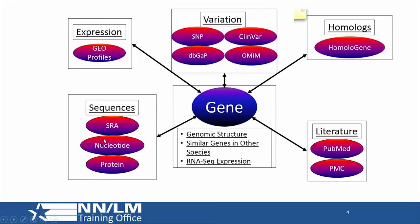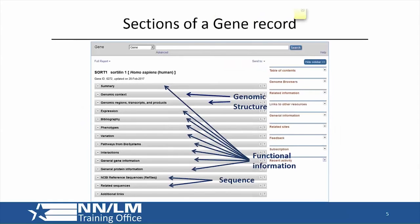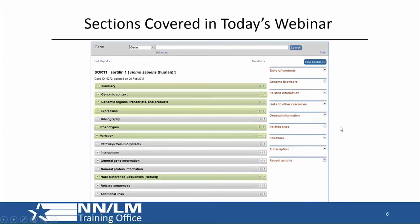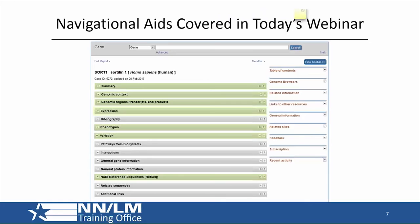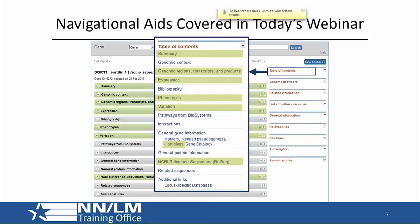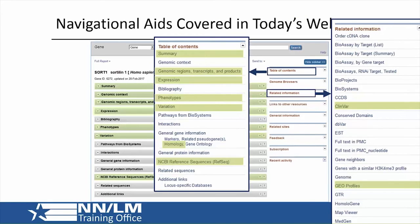All of these other databases shown here on this slide are cross-linked from gene entries to those different databases. When the sections of a gene record are collapsed, this is what it shows — all the different kinds of information in a gene record. You can see where you can get the genomic structure, functional information, and sequence records. The navigational aids in a gene record are shown on the right side of the page and include the table of contents for the gene record itself as well as related information.